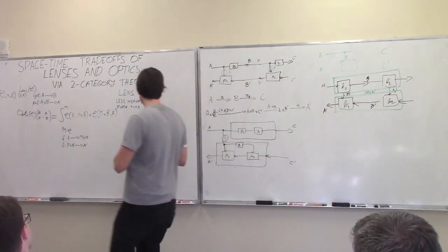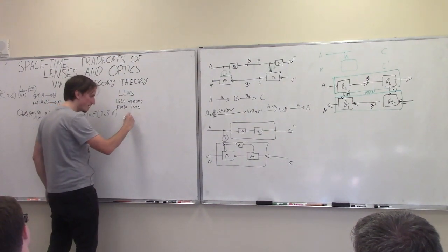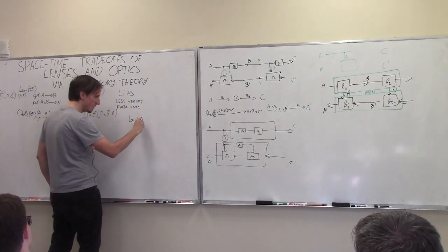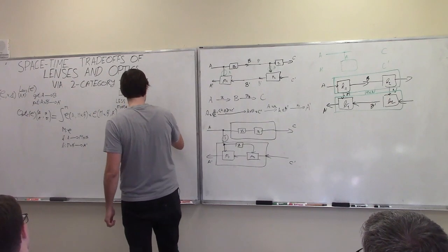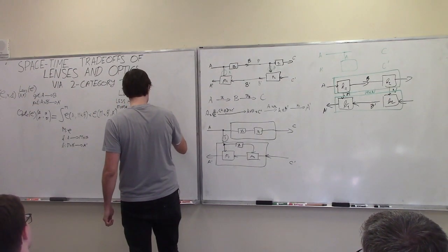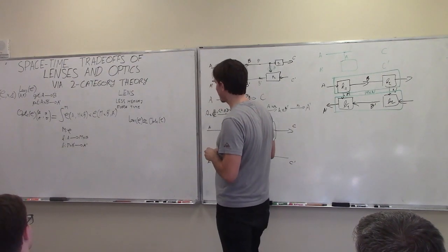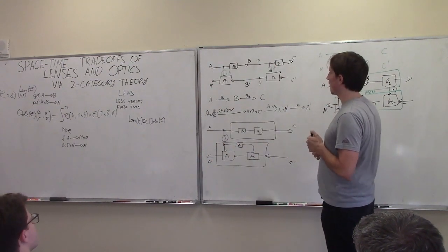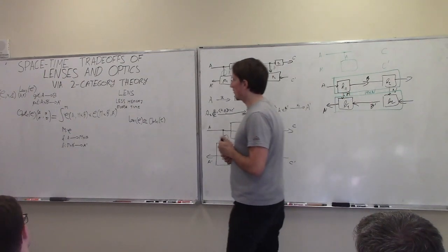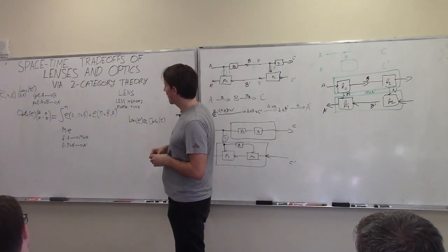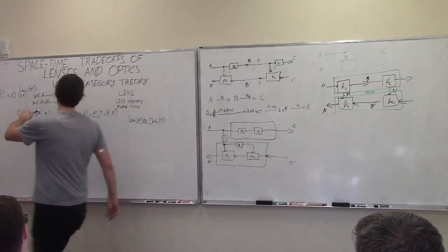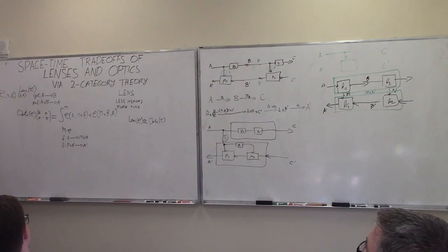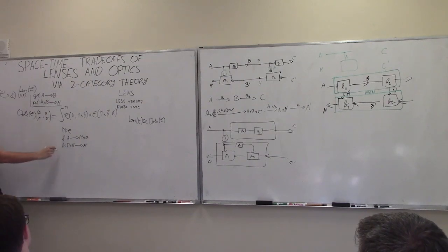What you can find in the literature is that people say the category of lenses is isomorphic to the category of optics. You can show this holds. The categories have the same objects, and to go from a lens to an optic: we say, well, let's say we have this lens and need to get an optic — we need to choose an M. What M do we choose? Well, M is our internal state, the thing we save, and we said this is always equal to A.